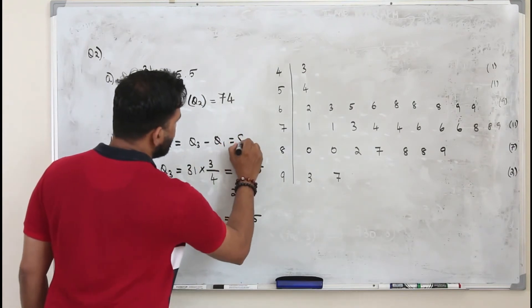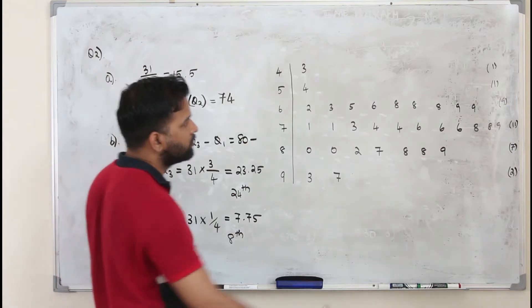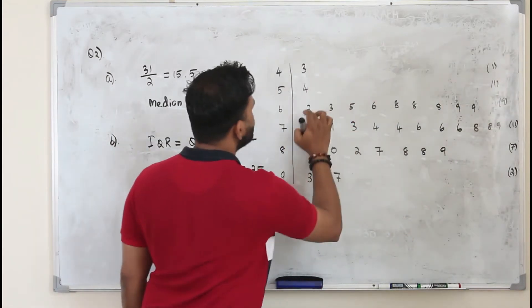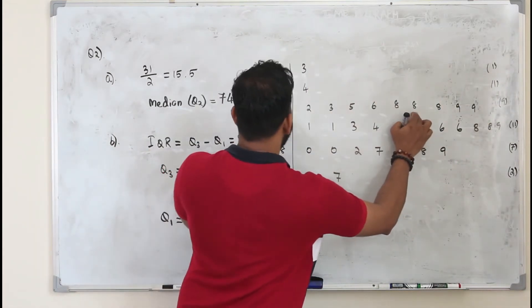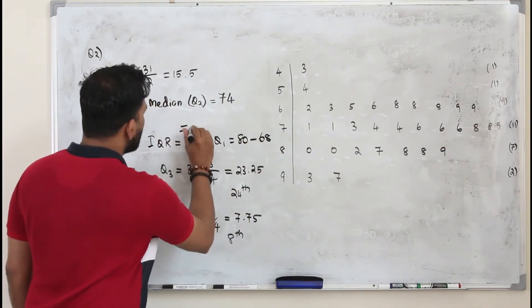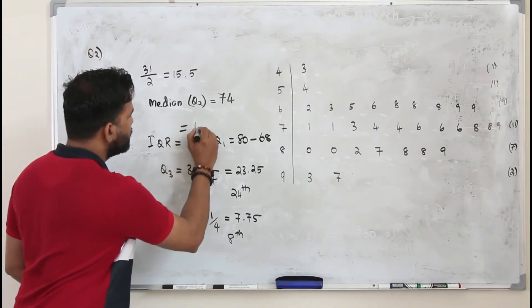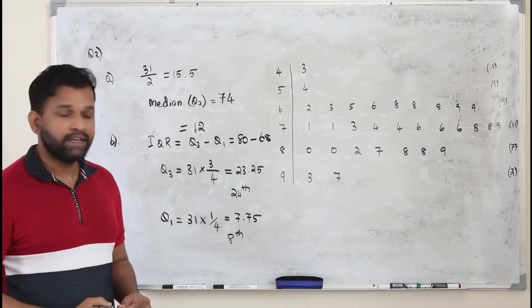So your Q3 is 80 minus Q1. 8th entry is 68. So the interquartile range is 12. 80 minus 68 is 12.